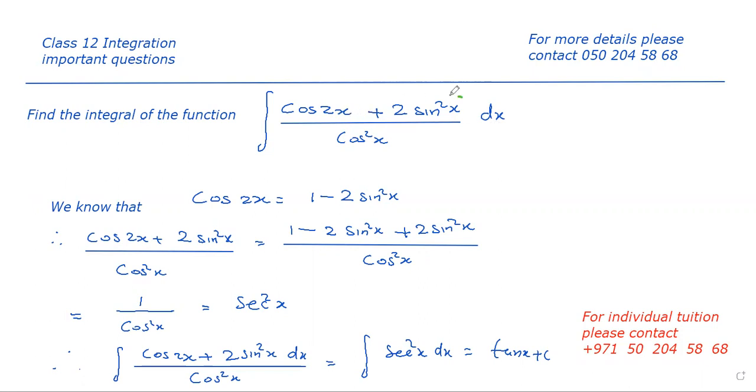For integrating this function, here we know that cos 2x has a formula which we can convert into sin square x. That is cos 2x equal to 1 minus 2 sin square x. The formula for cos 2x is 1 minus 2 sin square x.